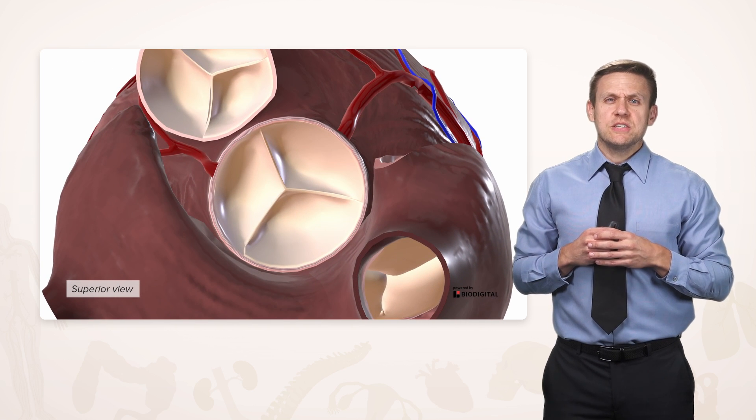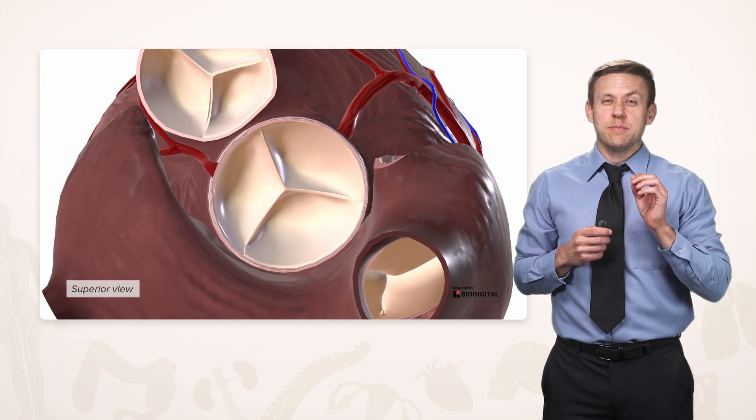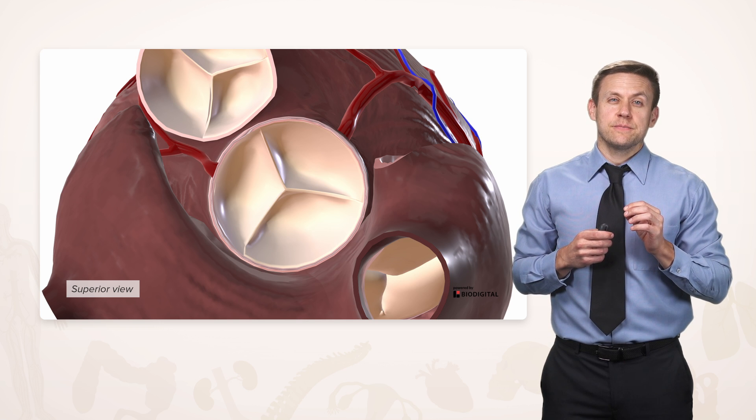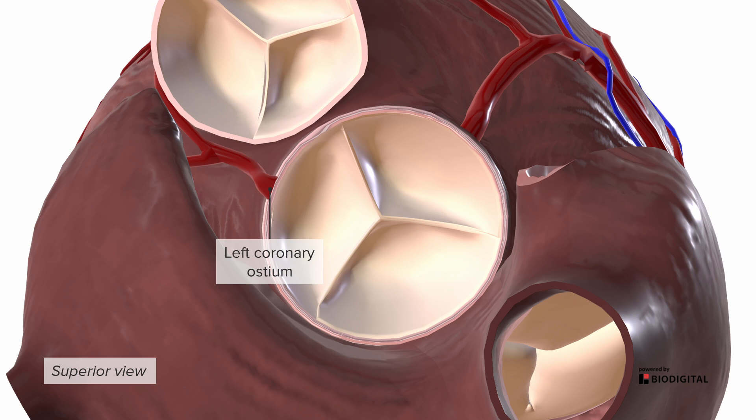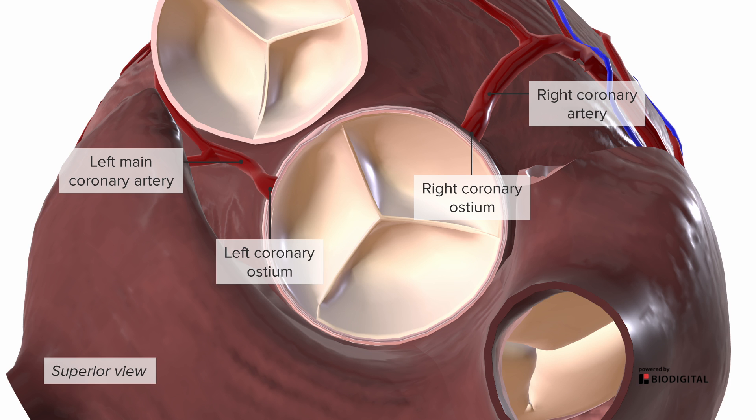Last time, we mentioned there were these holes that exist right above the aortic valve called ostia. We had one on the left called the left coronary ostium, and it's going to feed a coronary artery called the left main coronary artery. Similarly, we had an opening on the right called the right coronary ostium that's going to feed into the right coronary artery. And that other cusp that's called the posterior one is also called the non-coronary cusp because no coronary arteries originate from it.